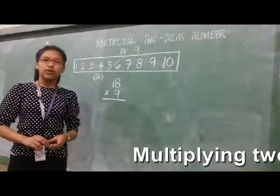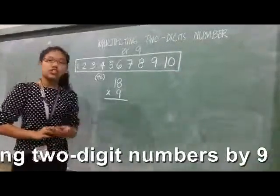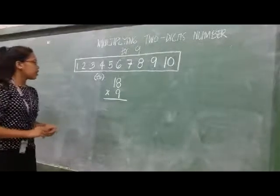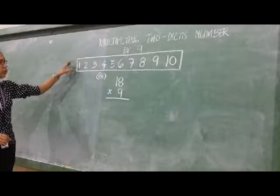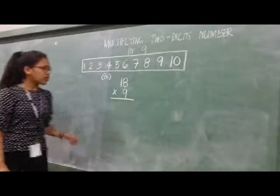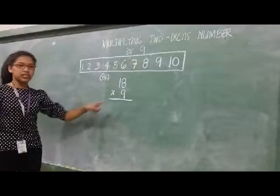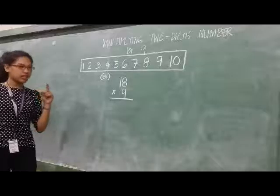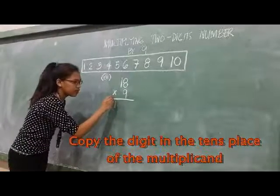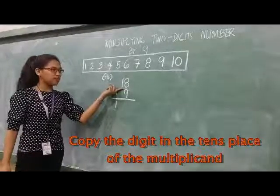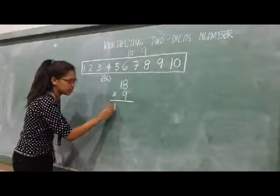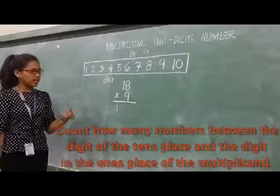Let me discuss how to multiply any 2-digit number by 9 mentally. For example, 18 times 9. We just copy the digit in the 10th place of our multiplicand, which is 1. So we write 1 here.